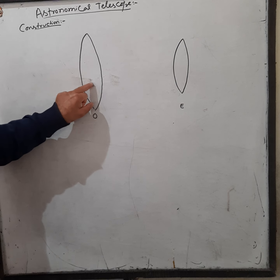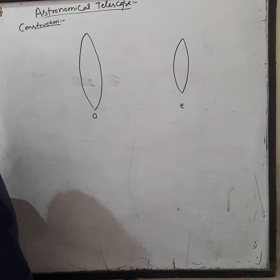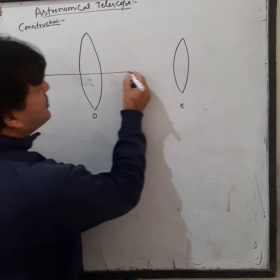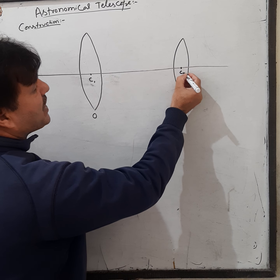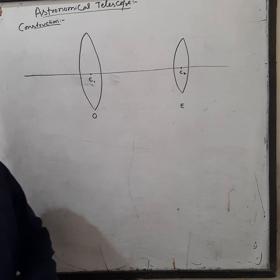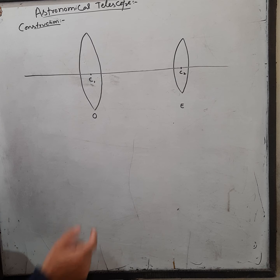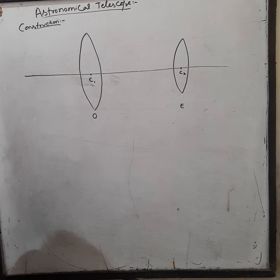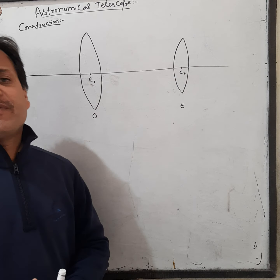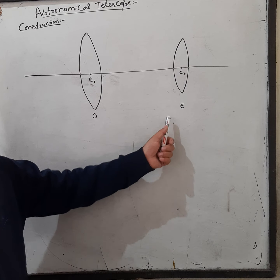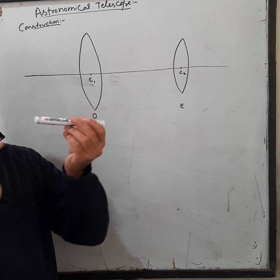In compound microscope, the objective lens was small and eye lens was large. But in astronomical telescope, objective lens is large and eye lens is small. Both lenses share a common principal axis passing through their optical centers. These two lenses are fitted at the two ends of two coaxial tubes.